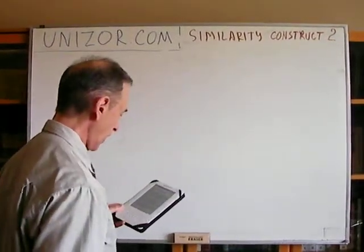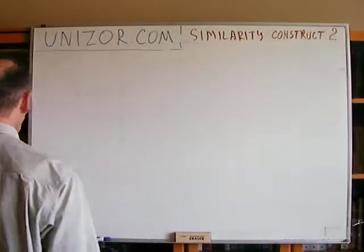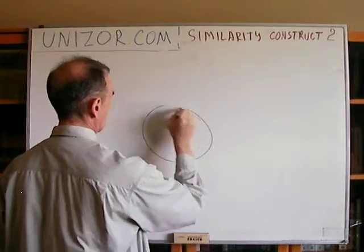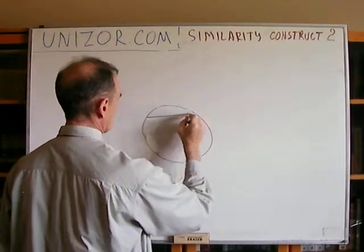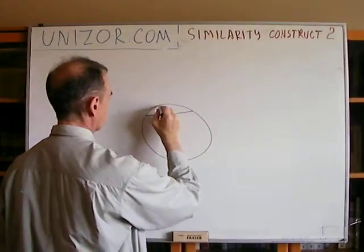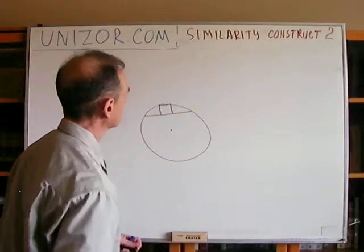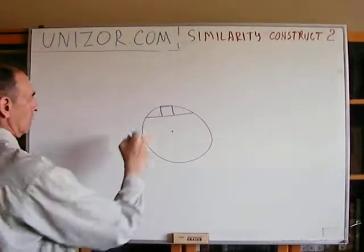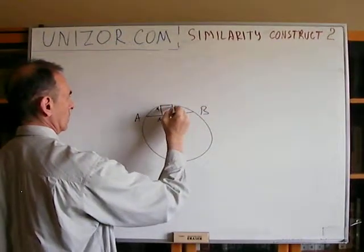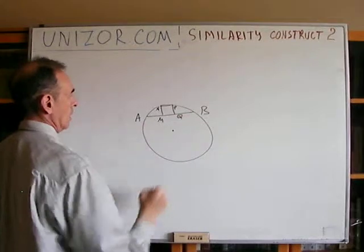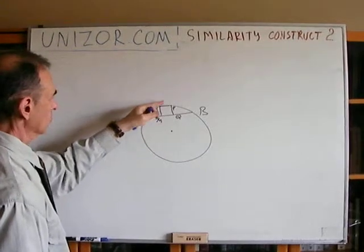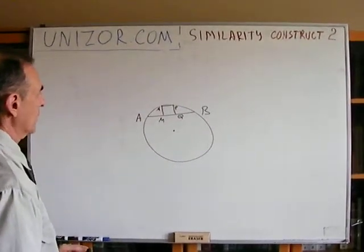Next: inscribe a square into a given circle such that one side lies on a given chord. The circle and a chord segment are given, and the square has two vertices on the chord and two vertices on the circle.